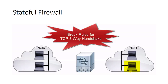For example, the ACK scan, which is an effective attack against packet filters, is recognized by a stateful firewall because the TCP connection information doesn't match that of the firewall state table. When this happens, the firewall drops the illegitimate ACK packet.